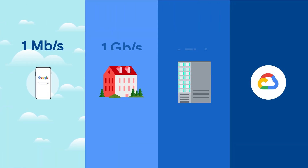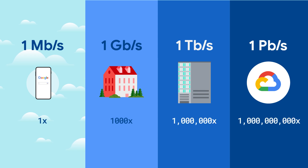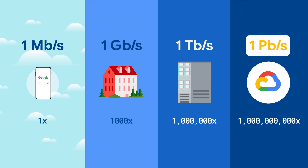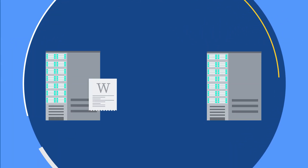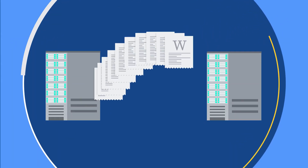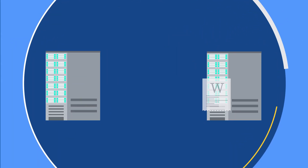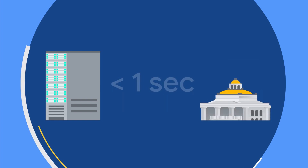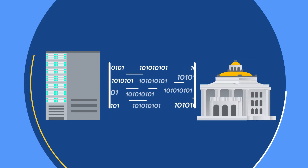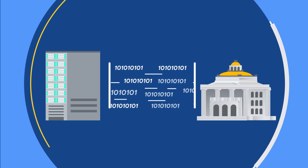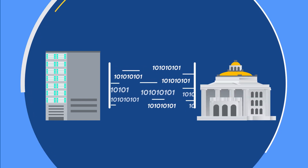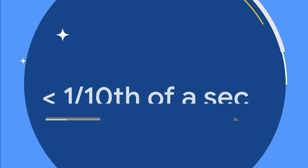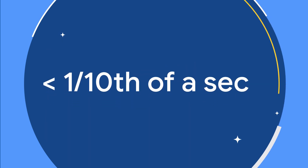First, you need to understand the size of our network. Google's network supports a one petabit per second bisectional bandwidth. To put that in perspective, you could transfer the entirety of Wikipedia in under a second, or enough bandwidth to read the entire scanned contents of the Library of Congress in less than one-tenth of a second.